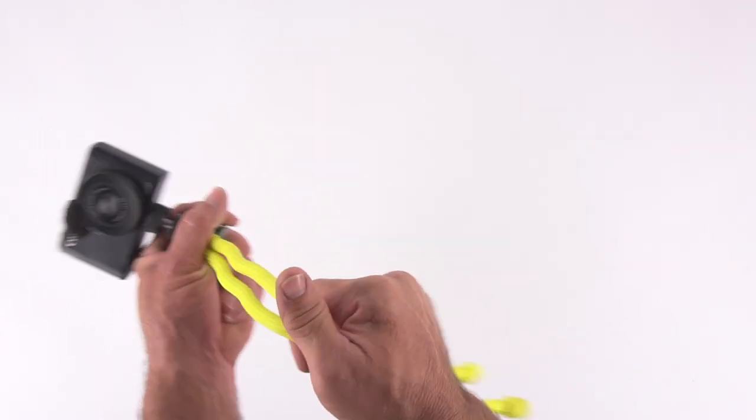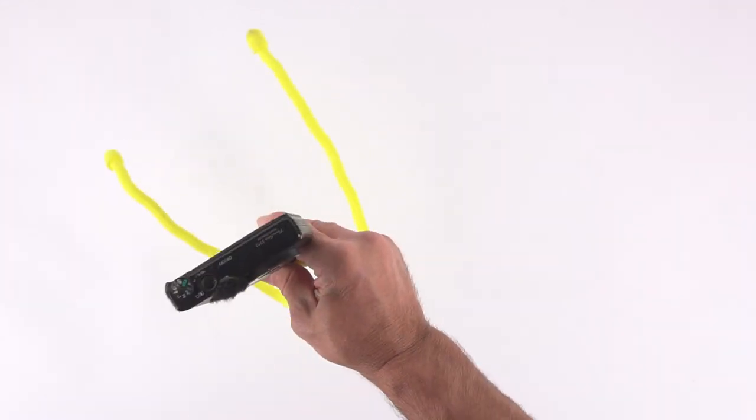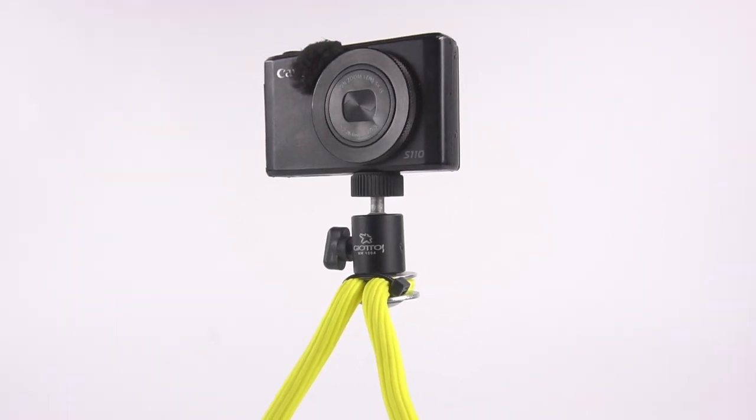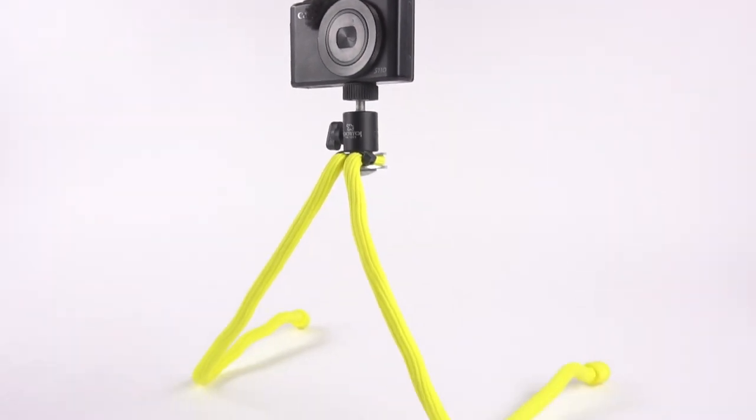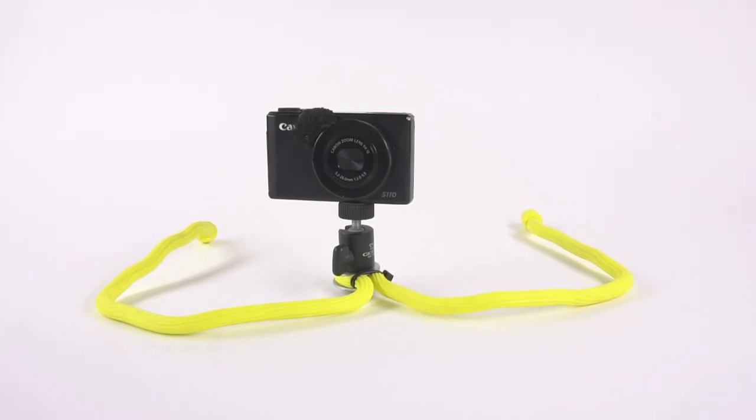Today we're going to build another gear ties project. This is another tabletop style tripod, but this is a very simple one. It only has two legs. I didn't think that this would be that useful, but man, I think I like this one better than the first one I built.